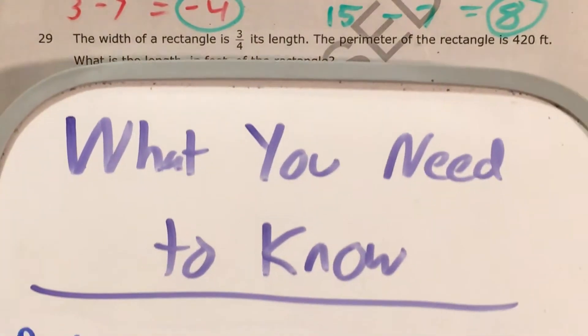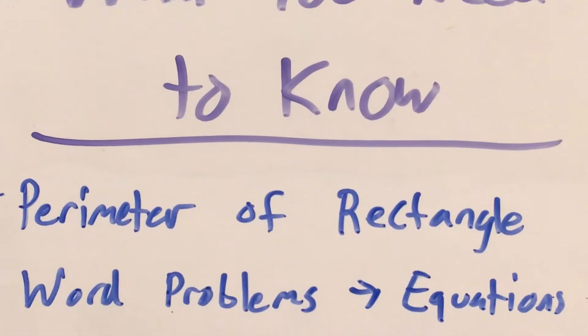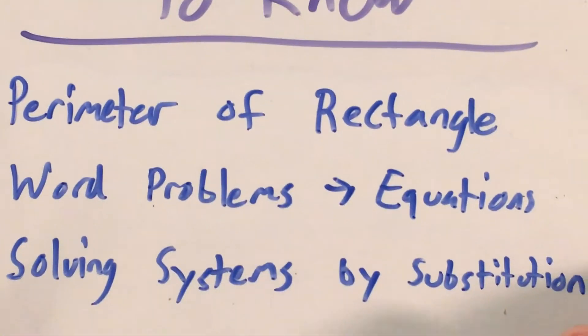Now the skills that this question is testing are perimeter of a rectangle, we'll need that, how to take word problems and turn them into equations, and also how to solve a system of two equations by substitution.